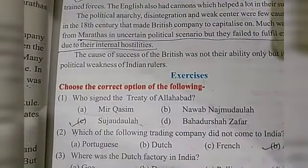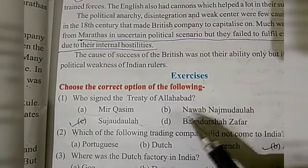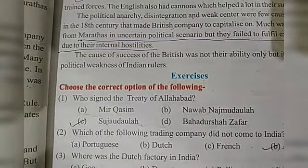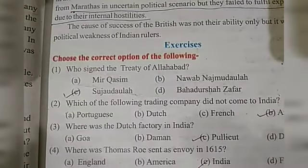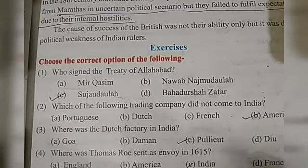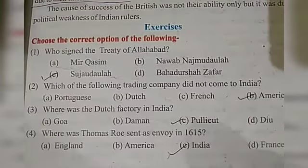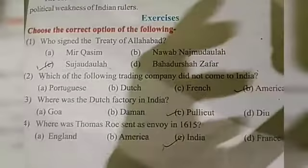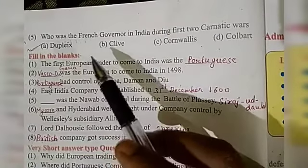Choose the correct option from the following. Who signed the Treaty of Allahabad? The answer is Suja-ud-Daula. Which of the following trading companies did not come to India? The answer is American. Where was the Dutch factory in India? Pulicat. Where was Thomas Roe sent as envoy in 1615? The answer is India. Who was the French governor in India during the first two Carnatic Wars? The answer is Duplex.